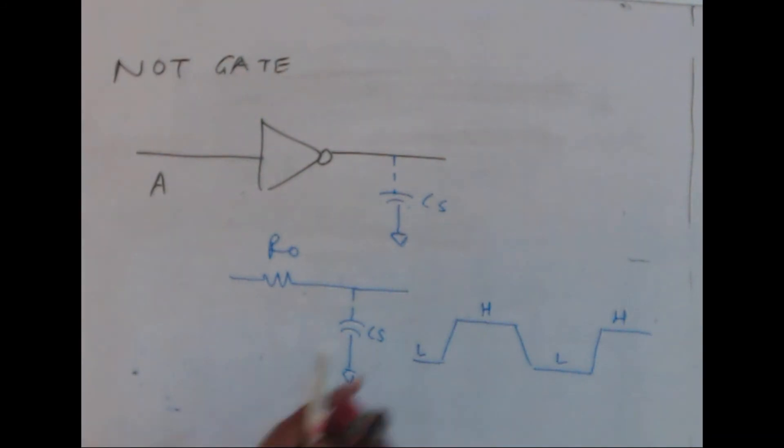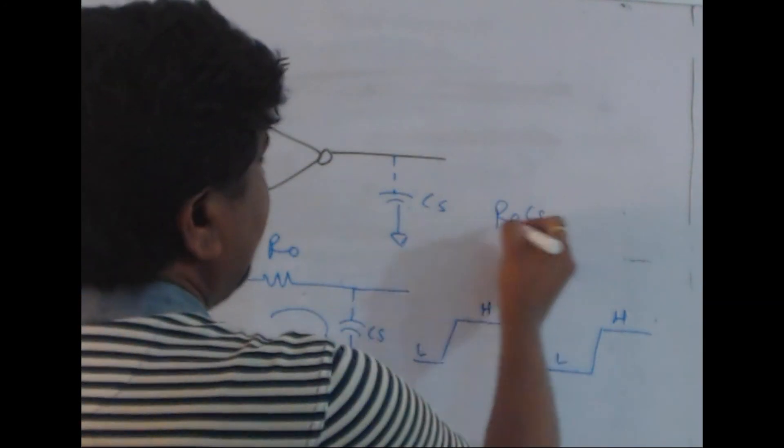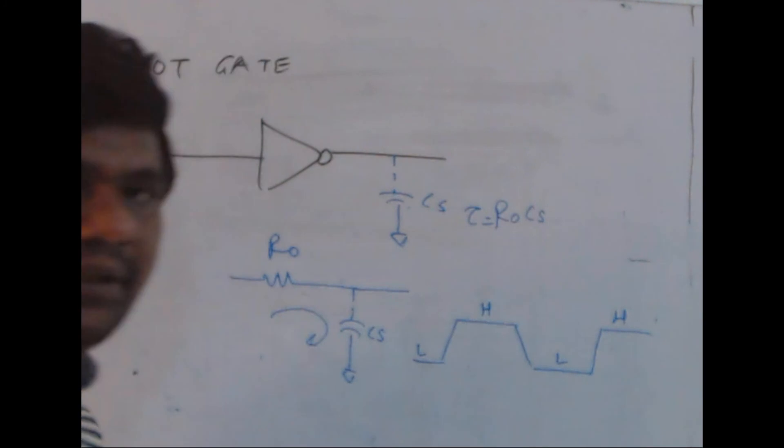We are having low to high transition and high to low transition. This happens due to the time constant. R0 times Cs is nothing but tau, the time constant.